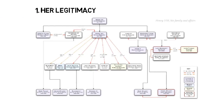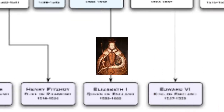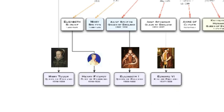To understand the problem of legitimacy, we need to look at the Tudor family tree. At the bottom row you can see Elizabeth, the second daughter of Henry the Eighth. She has an older sister Mary and a younger brother Edward. She also has a little-known older brother whose name was Henry.